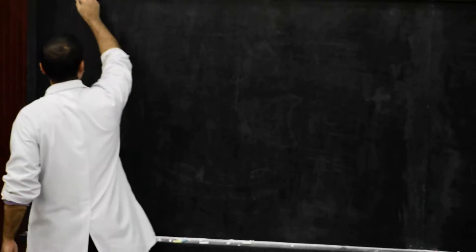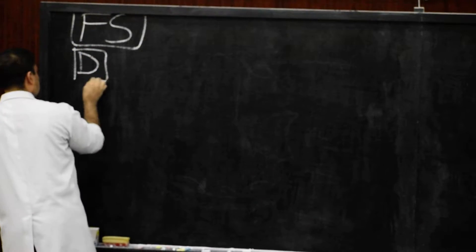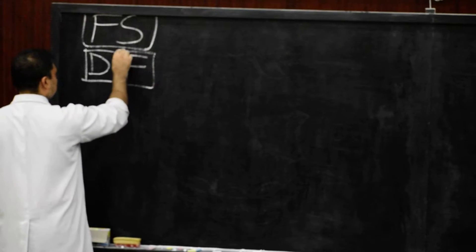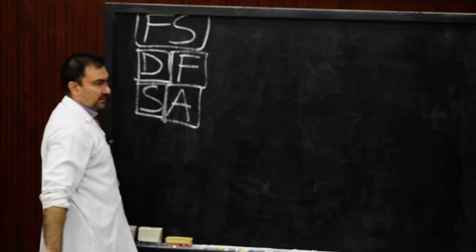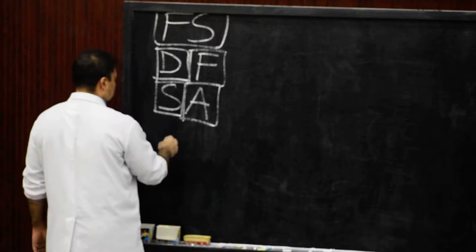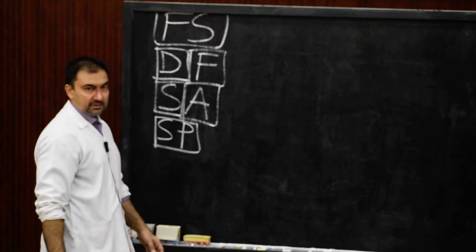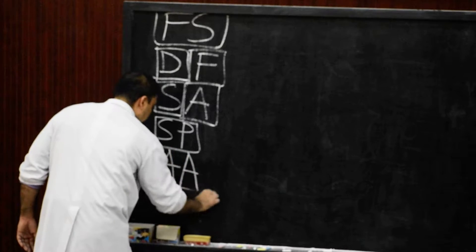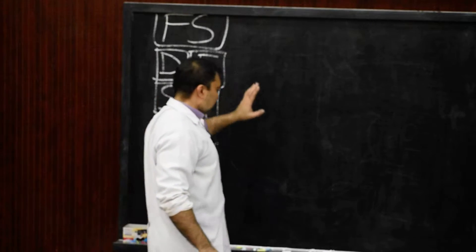Good morning students. Here we come up with the gross anatomy of femoral sheath, a very important lecture. We will discuss: first, the definition and formation — how it is formed; second, the structure, that is the anatomy; third, the structures which are piercing the femoral sheath; and fourth, the very important applied anatomy, that is the clinical anatomy of the entire femoral sheath.